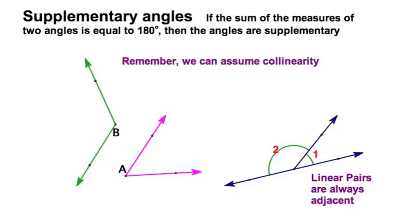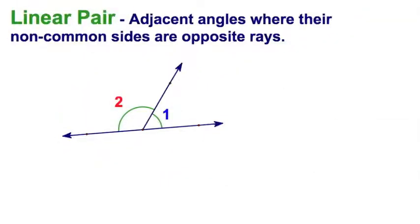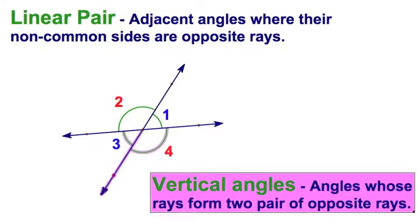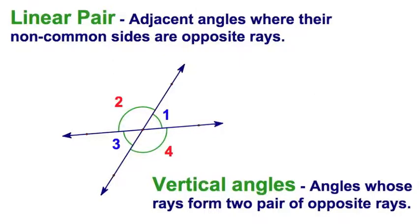One last thing on definitions. So we've just discussed the linear pairs, and if I were to combine this diagram with vertical angles, let's say we have two crossing lines. Obviously I generate four angles, so in this picture I've got angles one through four.